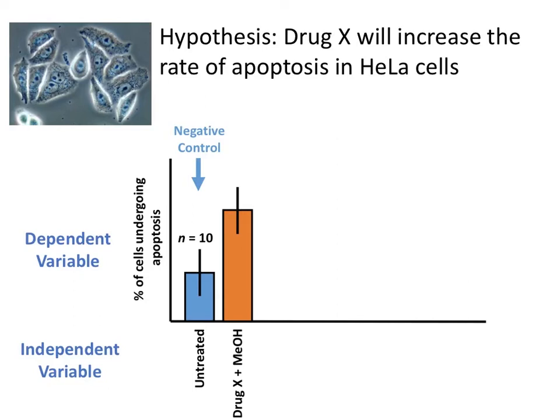Rather than just measuring things once, if we measure each one 10 times, then we can be calculating a mean — represented by the height of the bar — and some kind of measure of the variation, such as standard deviation. We've now got a more robust experiment in that we've got multiple measurements, we've got replicates in there. So we could then do a t-test between those two treatments, for example.